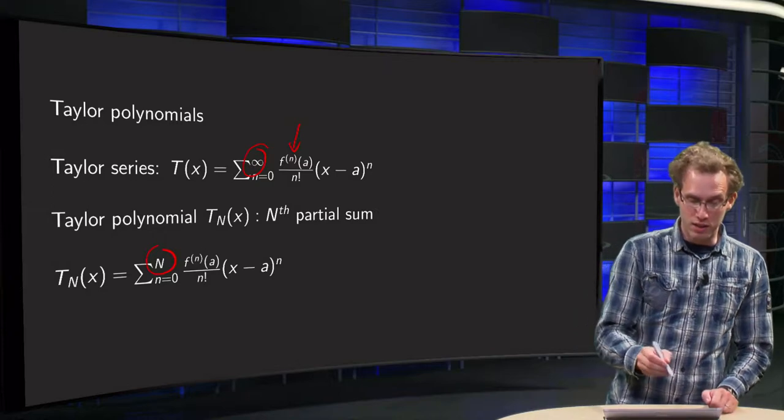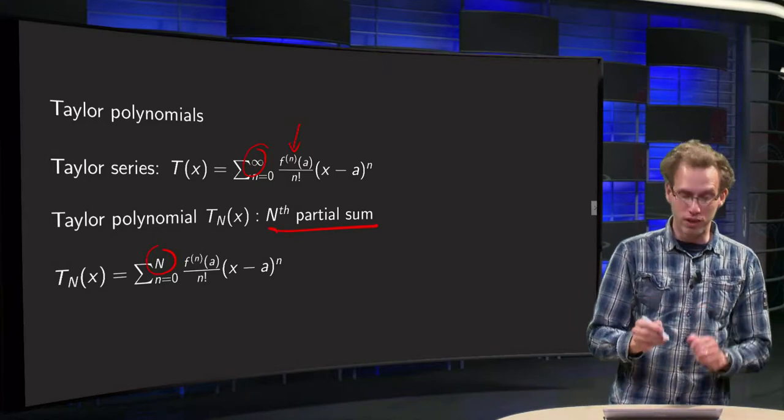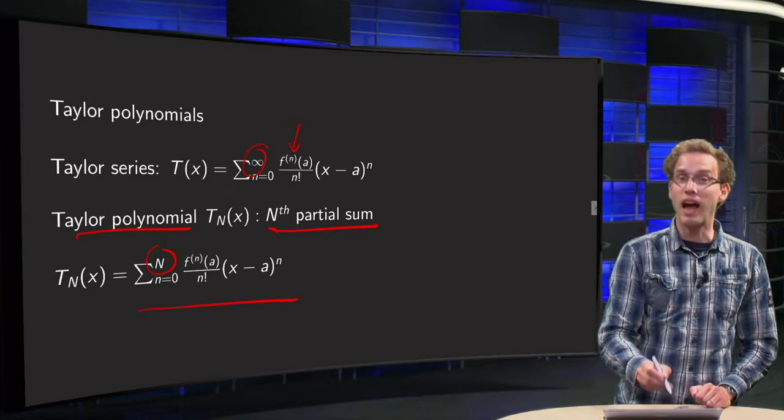As TN, this nth partial sum is called, very important, the Taylor polynomial of a function f.